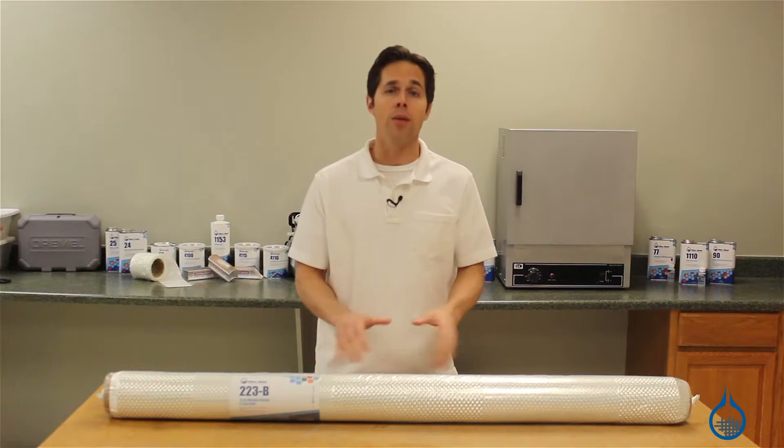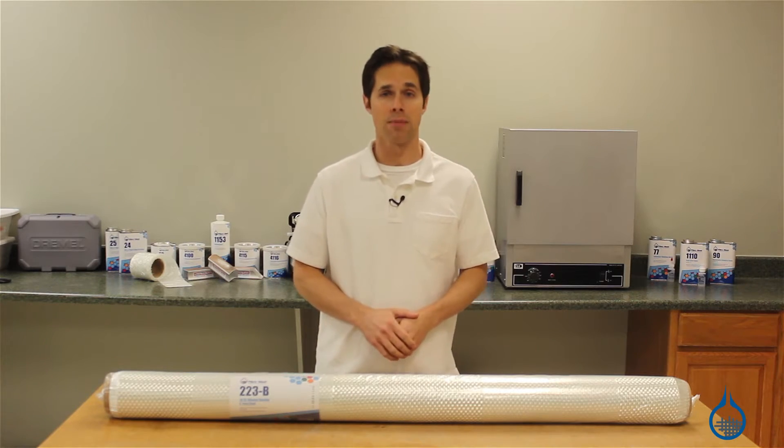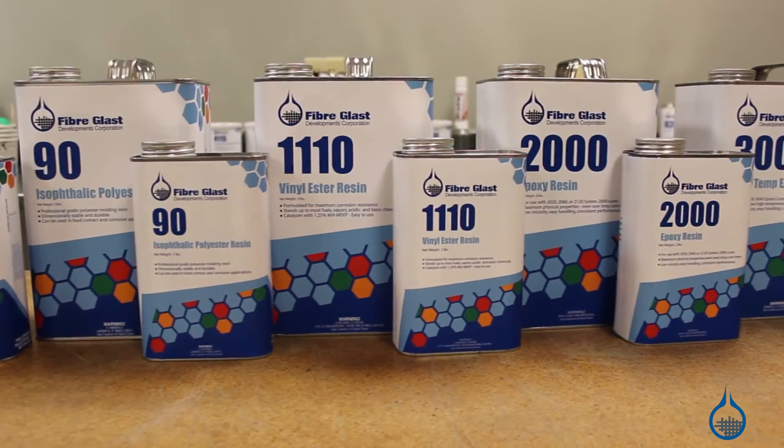Woven roving, our number 223, is meant to be used with resin as part of a composite lamination and is compatible with all the resins on our website.